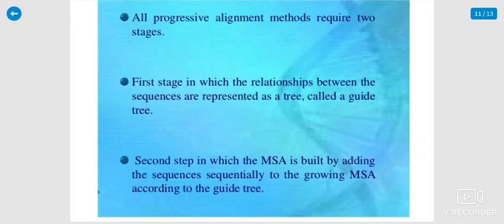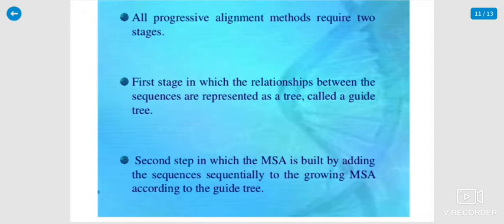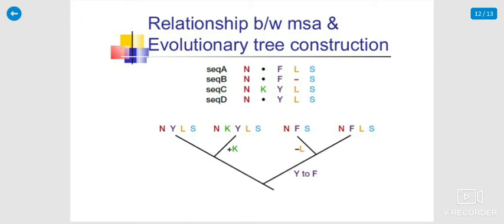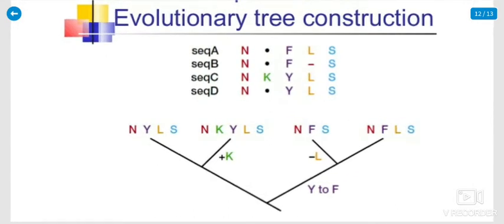All progressive alignment methods require two stages. Stage one: the relationship between sequences is represented as a tree called a guide tree. Stage two: the multiple sequence alignment is built by adding sequences sequentially to the growing alignment according to the guide tree. The output shows the relationship and a black-and-white multiple sequence alignment evolutionary tree construction for sequences A, B, C, and D.